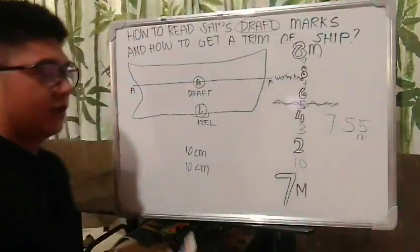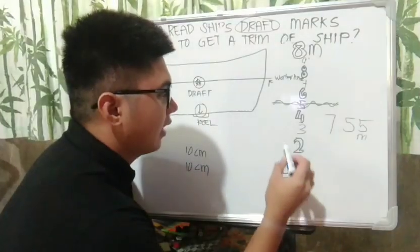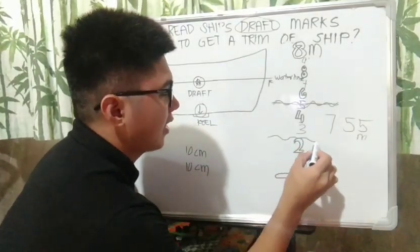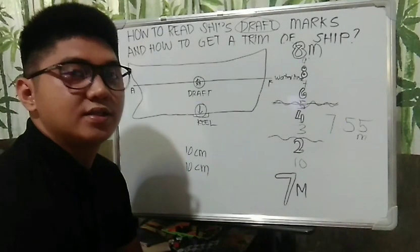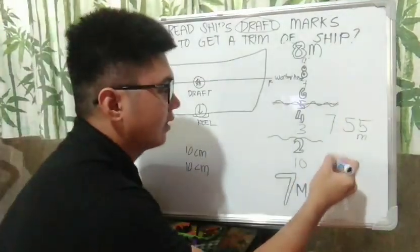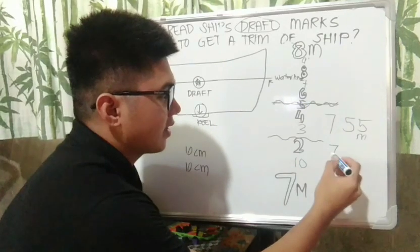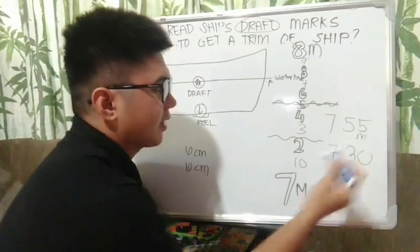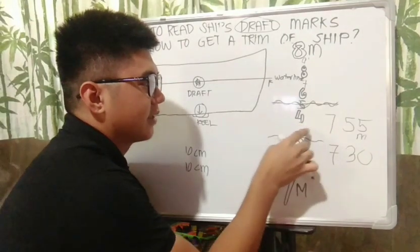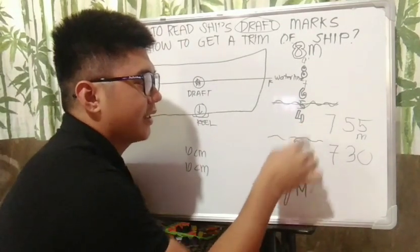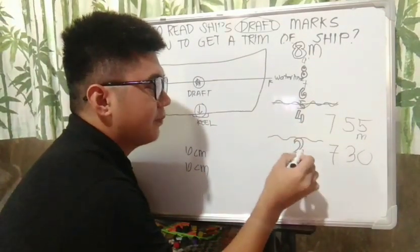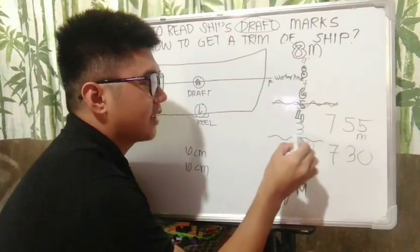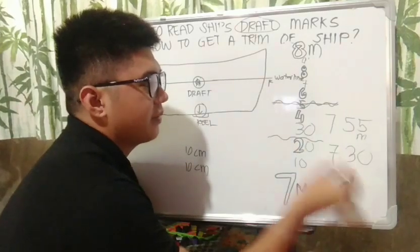Halimbawa naman, yung tubig po natin is nandito sa portion na ito. Ano po ang basa dyan? Ang basa po dyan is under ka ng 7 — 7.3. Zero, kasi ito kanina imaginary na lang yun. So, sa pagitan niya ng 4 and 2, after ng 20 — ang sunod mo na kasi dyan is 30 na yan. So, 7.30.